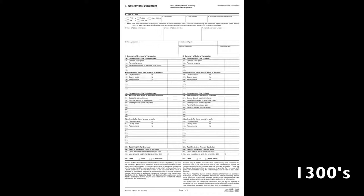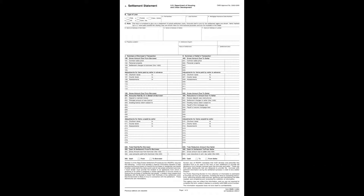The 1300 section is going to be miscellaneous fees, such as a home warranty that you might have agreed to pay for the buyer on the purchase. Then we total those fees on line 1400 and bring them forward to the settlement statement onto line 502.